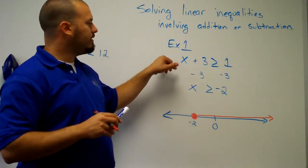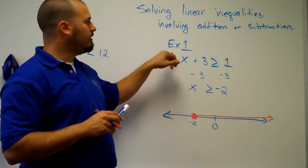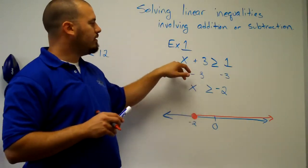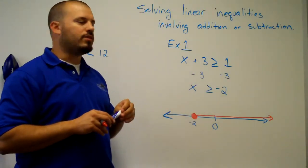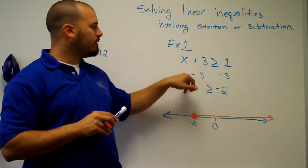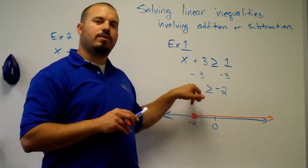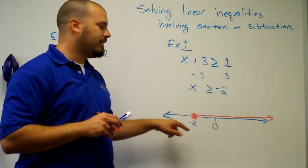So, the first step in solving this inequality, which only involves addition or subtraction, is to work as if we're dealing with an equation. And that would be subtract 3 from both sides, and end up with x is greater than or equal to negative 2, and then to graph it.